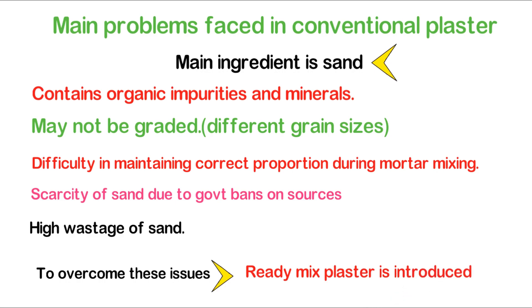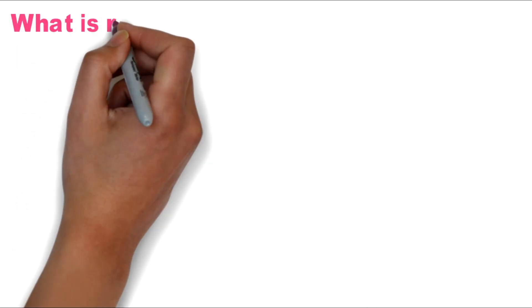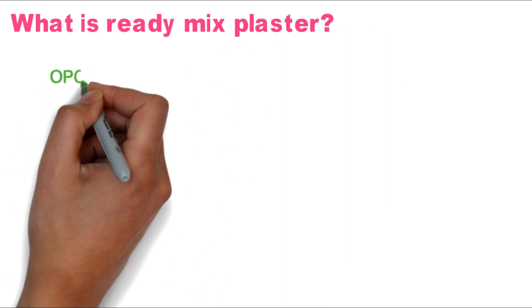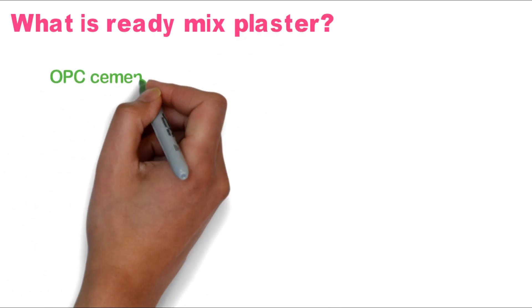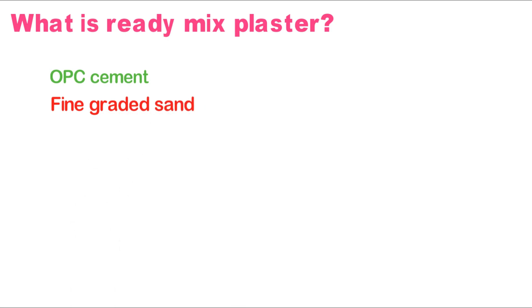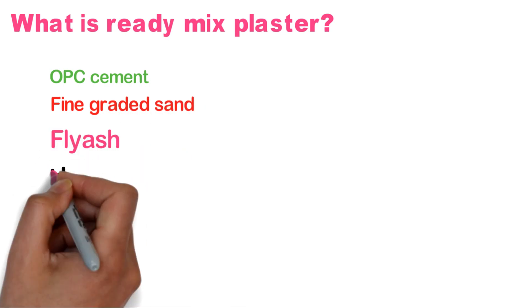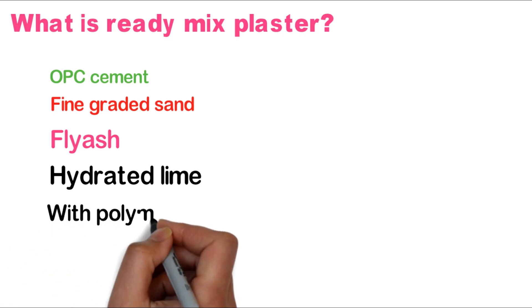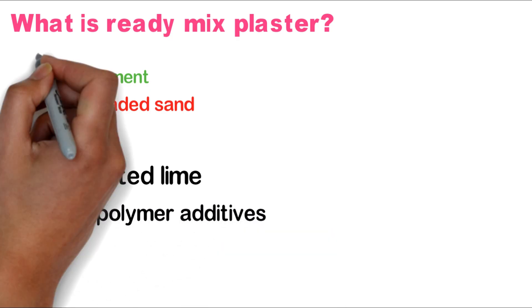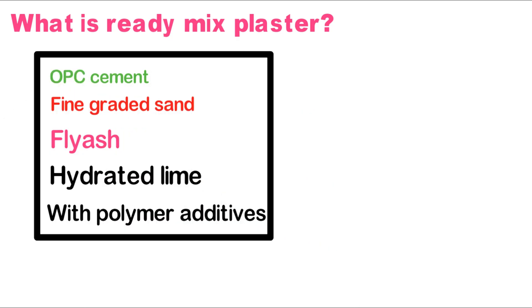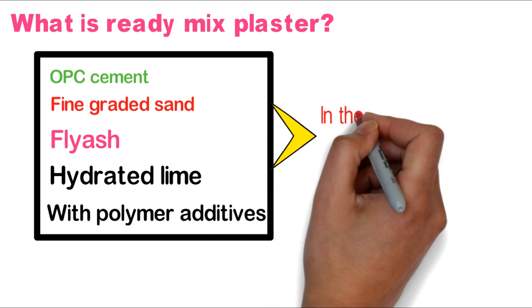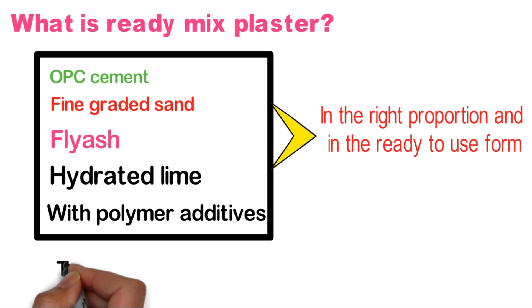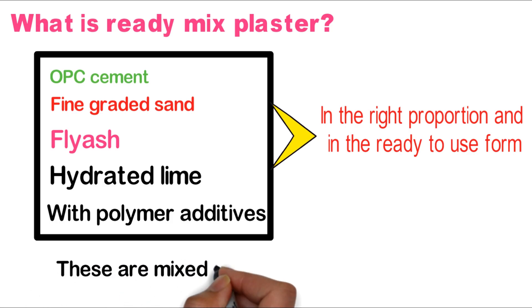What is ready mix plaster? Ready mix plaster consists of OPC cement, preferably 53 grade, fine graded sand, fly ash, hydrated lime and polymer additives. These are available in the right proportion and in ready-to-use form. The ingredients are mixed with water at site and applied.